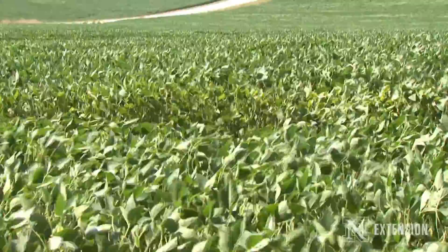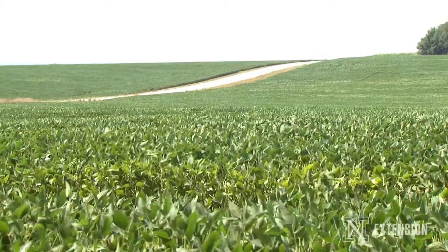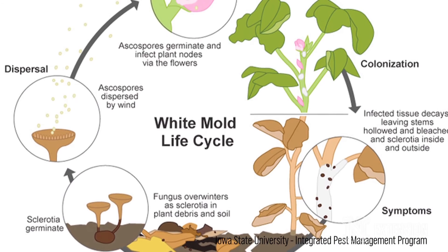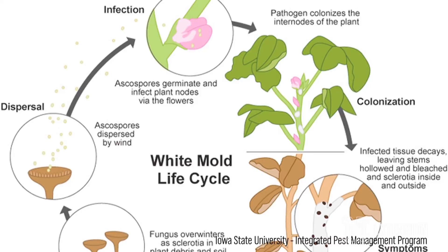With Sclerotinia stem rot, this is a fungal disease that we say is soil-borne, but it really starts with the sclerotia that produces a small mushroom when soil conditions are saturated with water, and then those produce spores that blow up into the flowers of the plant and start those infections.